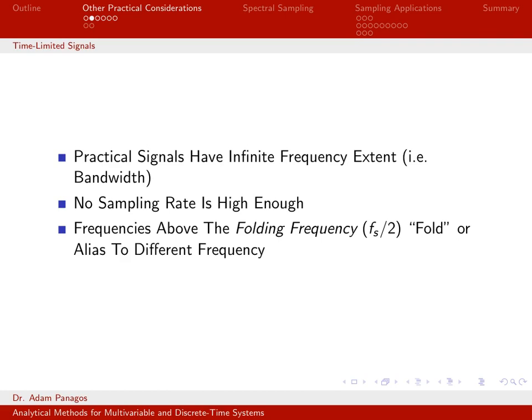Based on the previous two videos, when we deal with real signals, or practical signals, that are time-limited, they are going to have an infinite frequency extent. When we plot their Fourier transform in the frequency domain, there isn't a spot where their frequency content goes to zero and stays zero. The max frequency is infinite, which means I need to sample at two times infinity — and that means no sampling rate is high enough. So if I sample at something less than that, I'm going to run into a problem.